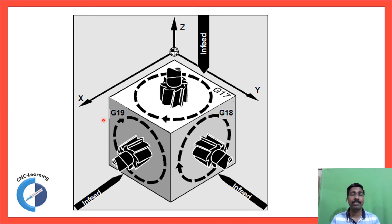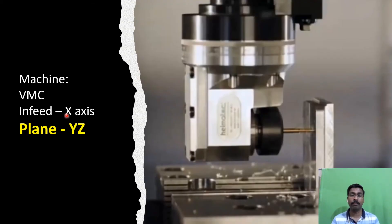So the question is, when do you really need this? In a VMC, most of the time, the infeed axis will be like this. The other two axis will be required, other two infeed direction would be required when you use a right angle head. So you can see, a right angle head is used in a VMC, the infeed axis is X, and here the plane is YZ.